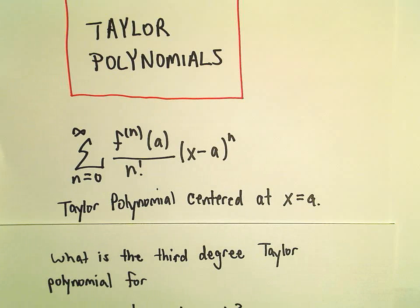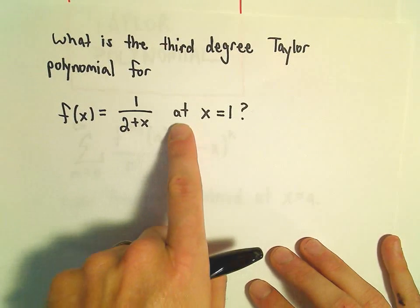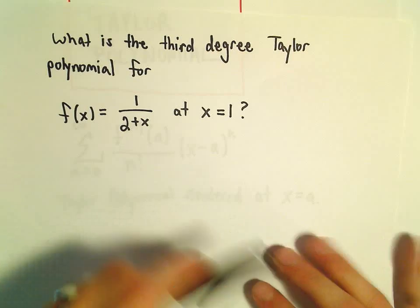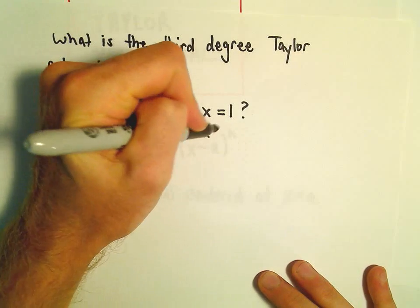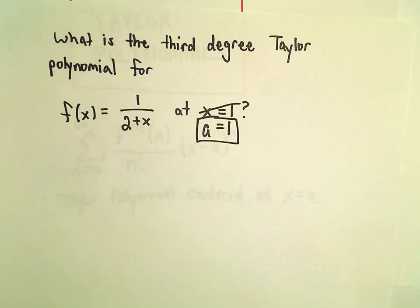All right, in this video we're going to find the third-degree Taylor polynomial for the function 1 over 2 plus x at the value of x equals 1, or equivalently we could say a equals 1 the way I have it written. So let's write it as a equals 1.